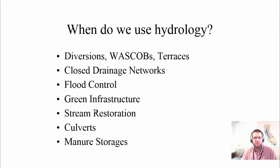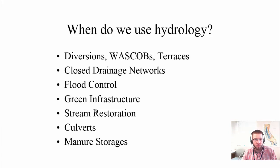What are some of the BMPs that need hydrology studies? We've got diversions, WASCOBs, terraces — these are all agricultural practices. Closed drainage networks are typically in urban areas. Flood control can be both. Green infrastructure practices are typically urban. Stream restoration is typically rural. Culverts, manure storages. Some of these practices only require peak flow rates, and others require you to know the entire storm volume.